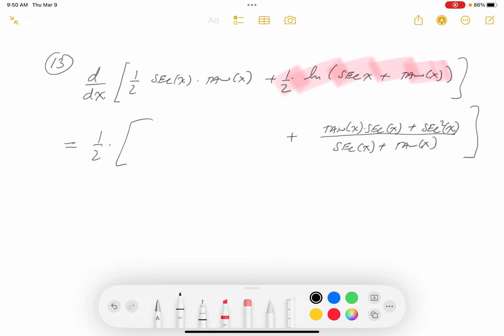Now I'm going to do this first term. I've already pulled the half out. It's going to be product rule now. It's going to be derivative of secant—secant tan—times the second function, which is tangent.